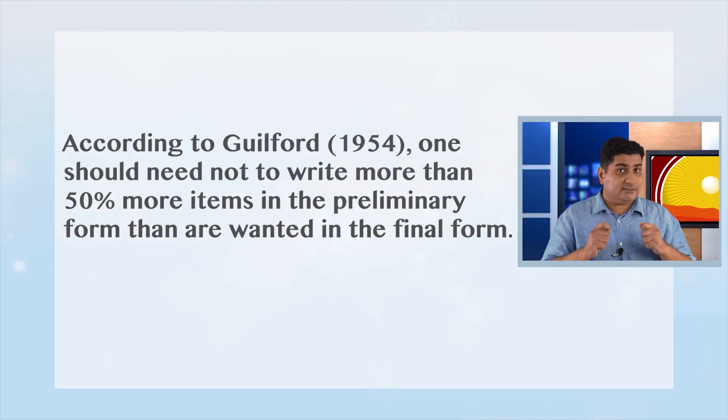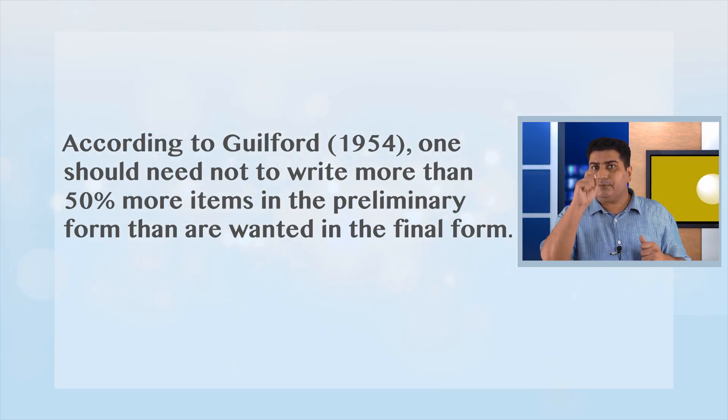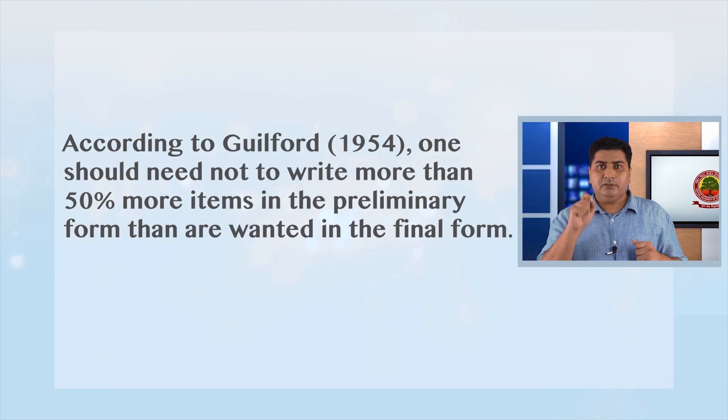However, Guilford suggests that one need not write more than 50 percent more items in the preliminary form than are wanted in the final form. Recalling the three cases: in Case 1, since we decided to keep 50 items in the final form of the achievement test, we should write approximately 75 items. Similarly, the same concept will be followed for Cases 2 and 3. It is important to mention that 50 percent extra is an approximate, not a rigid number.